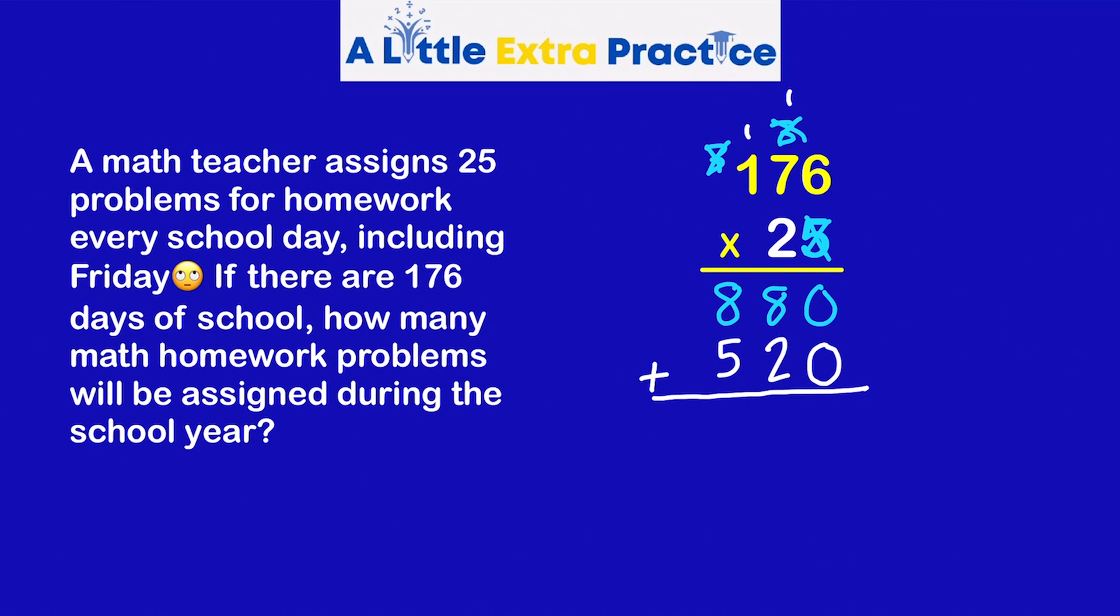2 times 1 is 2. Plus 1 is 3. My partial products are 880 and 3520. I will add these together.